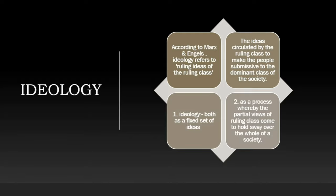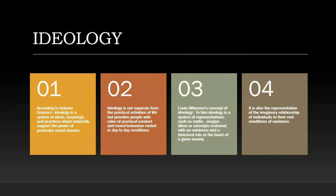Ideology is a highly problematic term in cultural theory. According to Karl Marx and Engels, ideology refers to the ruling ideas of the ruling class — ideas circulated by the ruling class to make the people submissive to the dominant class of society. This definition suggests that ideology can be understood in two ways: both as a fixed set of ideas, and as a process whereby the partial views of a ruling class come to hold sway over the whole of society. According to Italian Marxist philosopher Antonio Gramsci, ideology is a system of ideas, meanings, and practices which indirectly support the power of particular social classes.